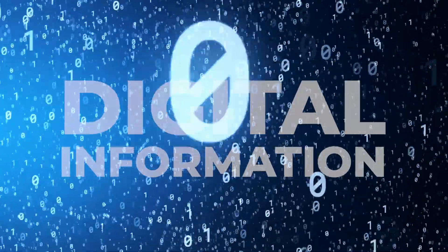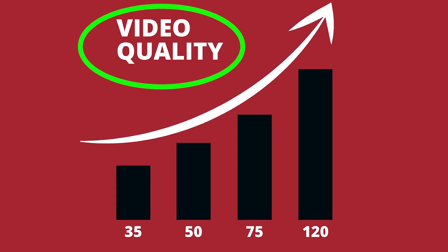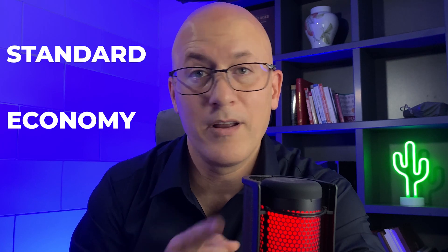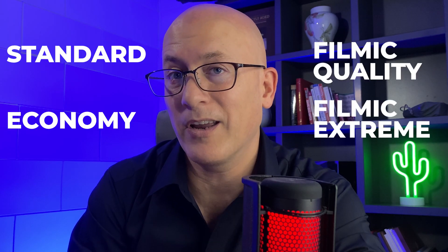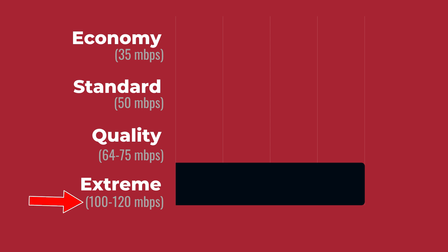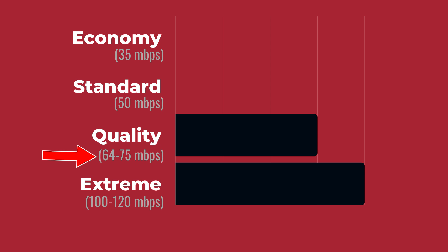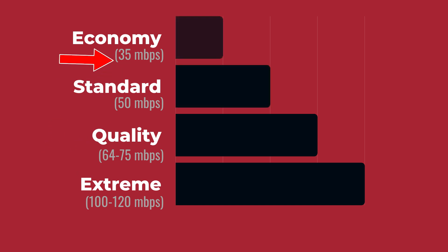How familiar are you with bitrate? Basically, it's the amount of digital information stored in your video files. Theoretically, the higher the bitrate, the better the quality. However, the higher the bitrate, the more storage required for each file, and the harder your phone's processor needs to work. On Filmic Pro, you have four options: Economy, Standard, Filmic Quality, and Filmic Extreme. Filmic Extreme is somewhere between 100 to 120 megabits per second. Filmic Quality is around 64 to 75. Standard is around 50, and Economy is about 35 megabits per second.